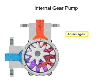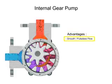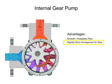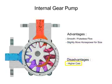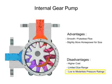Advantages of internal gear pumps are a smooth and almost pulseless flow and slightly more horsepower for its size. Disadvantages are its higher cost, limited size range, low to moderate pressure ratings, and few sources of manufacture.